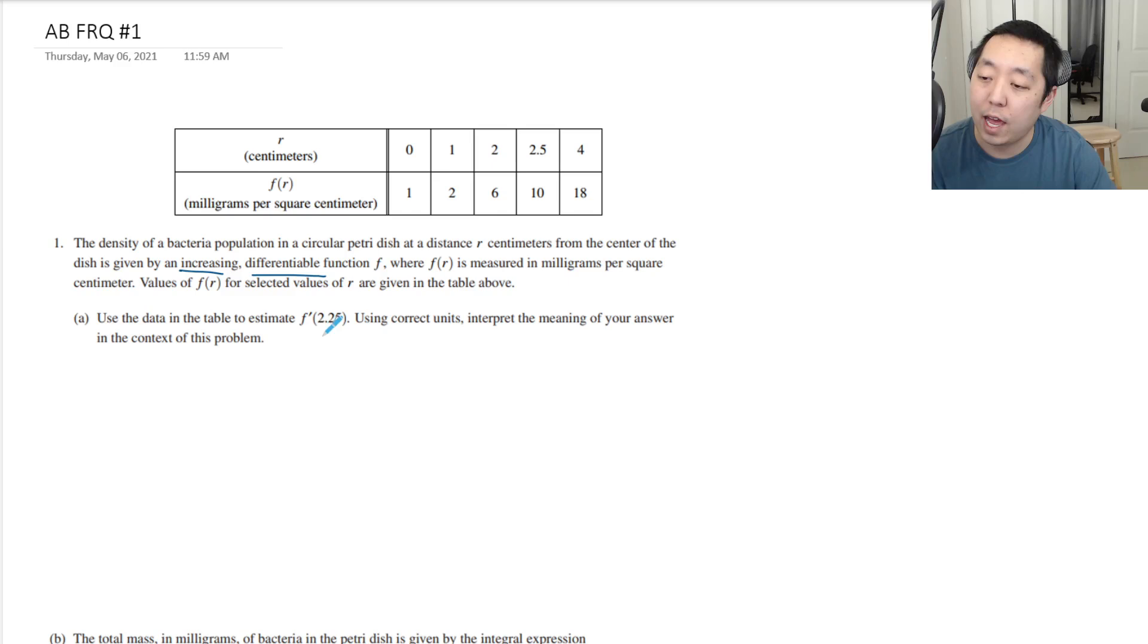Use the data in the table to estimate f prime of 2.25. 2.25 is halfway between here, and we approximate it with a secant line slope because I have these two points. You could say it's f of 2.5 minus f of 2 over 2.5 minus 2.